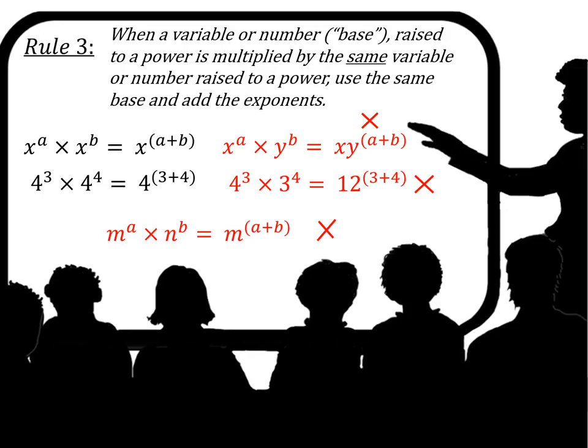Now look at the right side: x to the a times y to the b — is that equal to xy raised to the a plus b? No. Look back at the rule: the base has to be the same, and x and y are not the same base. Similarly, 4 to the third times 4 to the fourth equals 4 to the seventh, but 4 to the third times 3 to the fourth does not equal 12 to the seventh — the bases must be the same. The exponents can be different, but it has to be the same base.